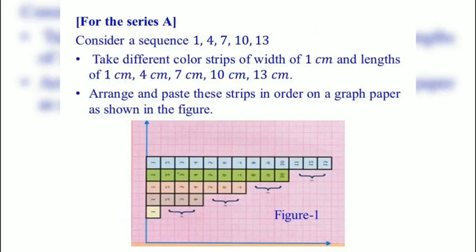For series A, consider a sequence 1, 4, 7, 10, 13. Take different color strips of width 1 cm and lengths of 1 cm, 4 cm, 7 cm, 10 cm, 13 cm. Arrange and paste these strips in order on a graph paper as shown in the figure.